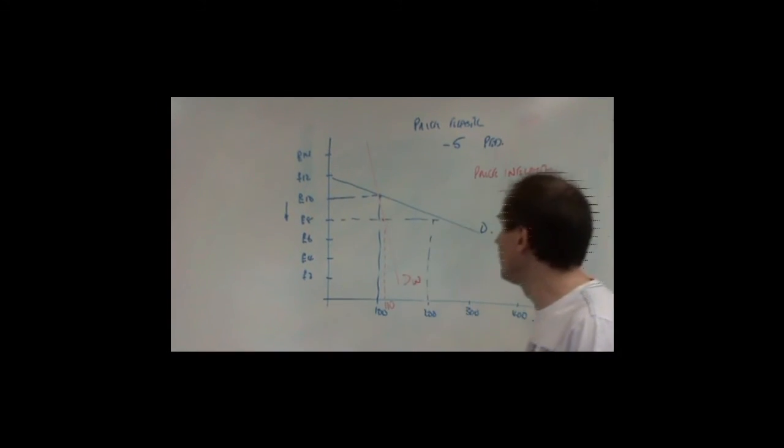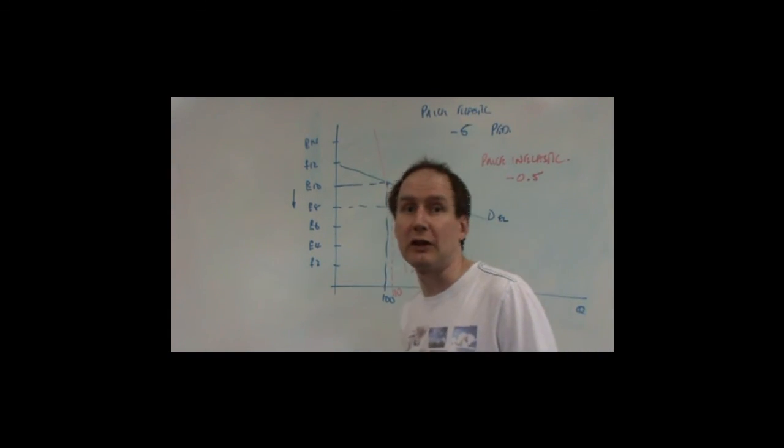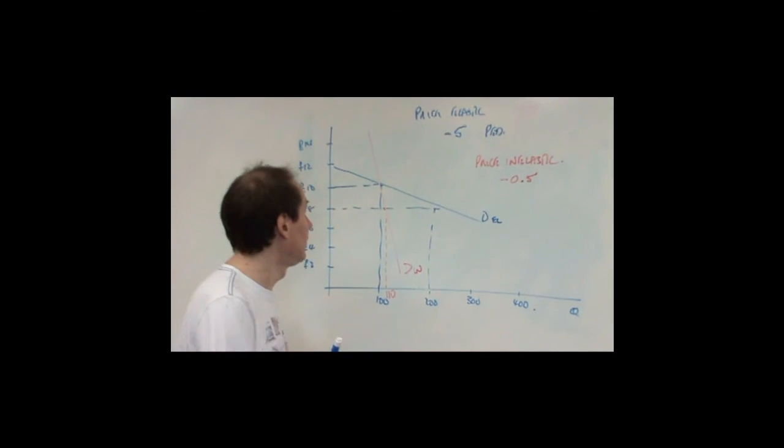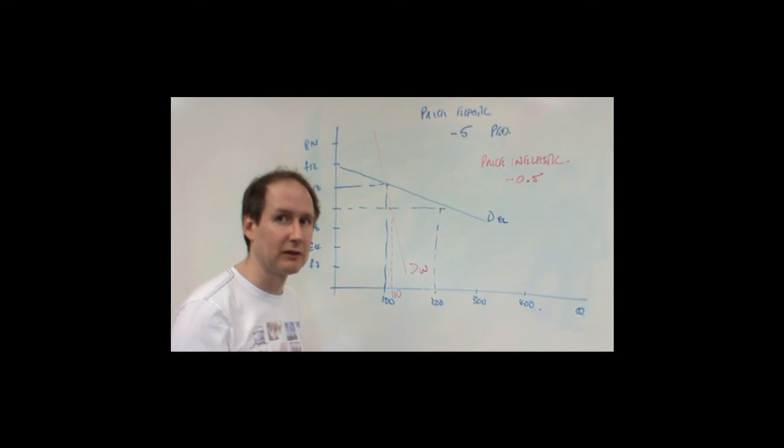So what we will generally observe then is that a demand curve that looks like that is generally price elastic. One that looks like that is generally price inelastic. However, that can be slightly misleading, just to look at the gradients of the demand curves. And the reason is that, actually, price elasticity of demand, the formula is made up of two bits.